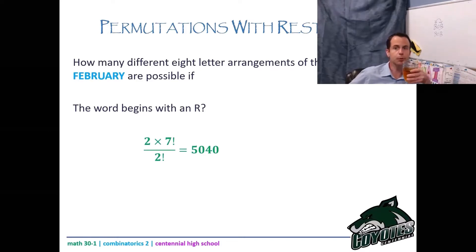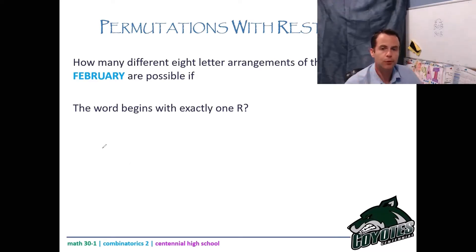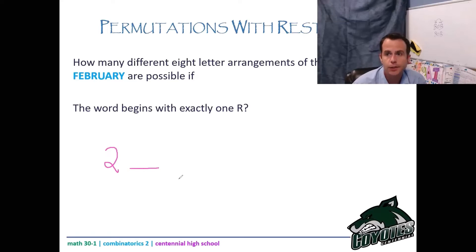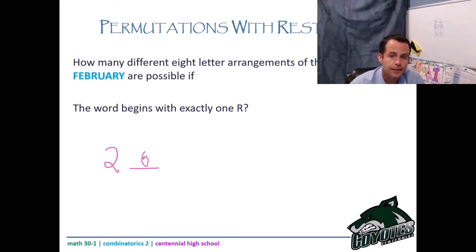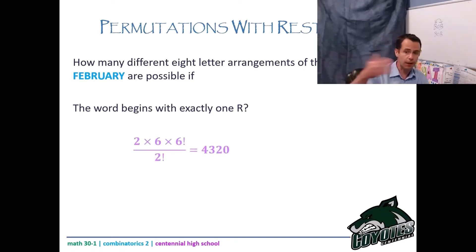Make sure you're putting this in your calculator and pausing to verify. Now: the word begins with exactly one R. I still have 2 R's to choose from for the first position. The second letter must be a non-R — there are 6 non-R letters in February. Then I multiply by 6 factorial for the remaining letters, and divide by 2 factorial for the repeating R's. That gives 2 times 6 times 6 factorial divided by 2 factorial, which equals 4,320.